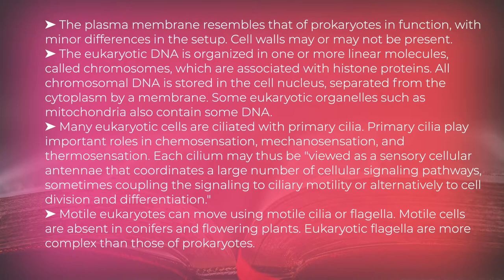Many eukaryotic cells are ciliated with primary cilia. Primary cilia play important roles in chemosensation, mechanosensation, and thermosensation. Each cilia may thus be viewed as a sensory cellular antennae that coordinates a large number of cellular signaling pathways, sometimes coupling the signaling to ciliary motility, or alternatively to cell division and differentiation.